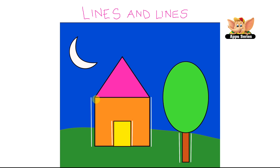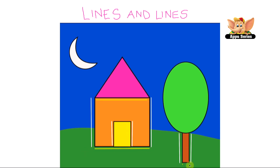Now that we've found all the standing lines, let's try looking for the sleeping lines. If you look on the top of the house, there's one over there. If you look at the bottom of the house, there's another one. At the bottom of the tree there's another sleeping line. There's one more sleeping line on the top of the door. Now we've found all the sleeping lines.